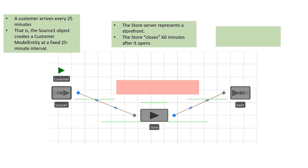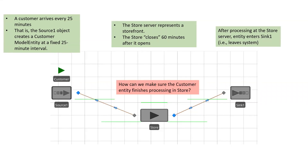Once the simulation starts, after 60 minutes it'll close. You can look at the work schedule to see when it opens as well. Once it closes, you'll see a situation where customers that are already inside the store have already begun processing, but the store abruptly closes. How can you make sure a customer entity finishes processing if they're already in there when the store closes or goes off-shift according to the work schedule?